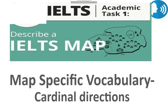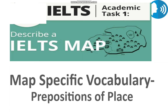Moving on, let's look at some map-specific vocabulary. First, the cardinal directions: north, south, east, and west. The points between these four main directions are known as the inter-cardinal directions: northeast, southeast, southwest, and northwest. Note that in English you don't need to use capital letters for them while writing.